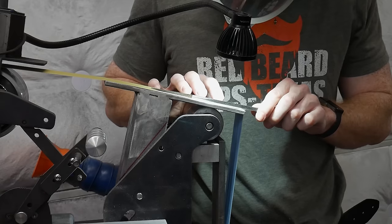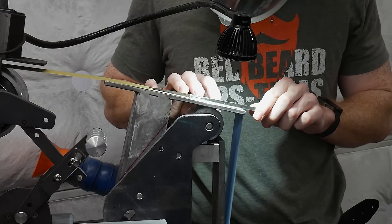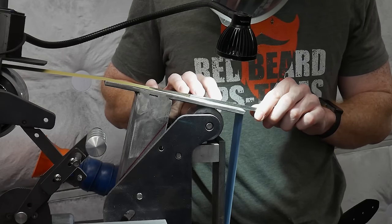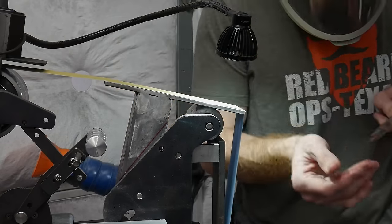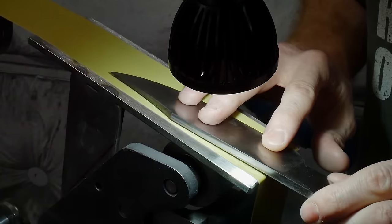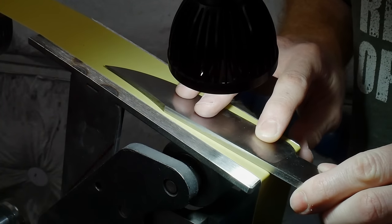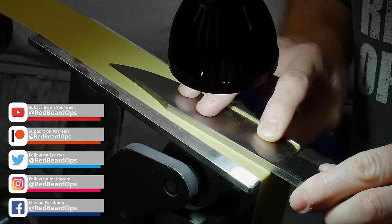This waterfall platen takes some practice to get used to but if you have some patience in general the results are great. I work up to a 320 grit belt here making sure to apply pressure towards the bottom of the plunge. This reduces the chances of me grinding into the spine at the top of the plunge.